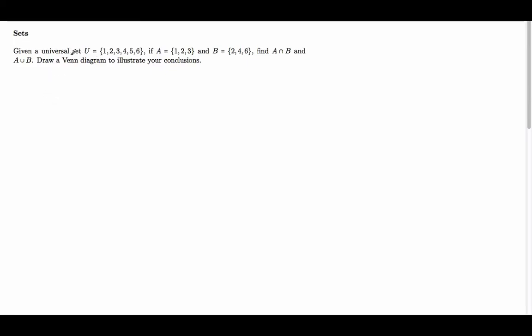For this example we're given the universal set U which has the elements 1, 2, 3, 4, 5 and 6 and we have two sets: A which has the elements 1, 2 and 3, and B with the elements 2, 4 and 6. We've been asked to find the intersection of A and B and the union of A and B, and we've been asked to draw a Venn diagram to illustrate our conclusions.